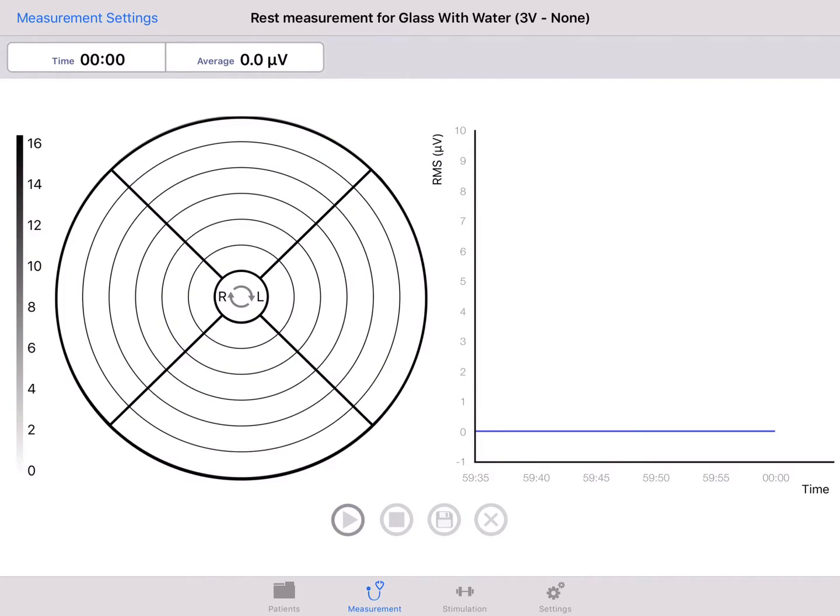On the right, a line graph is displayed. This line graph shows you the average EMG of selected electrodes in microvolts. Above the grid and line graph, you see the time and also the average EMG of the selected electrodes in microvolts.